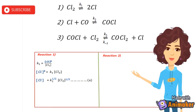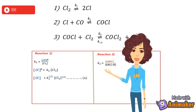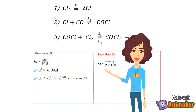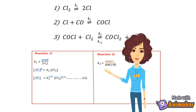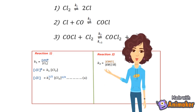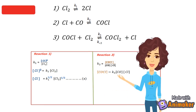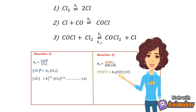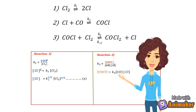Now starting with reaction 2. The rate expression can be given as K2 equals the concentration of the product, i.e. concentration of COCl, upon the concentration of the reactants, i.e. concentration of CO times concentration of Cl.